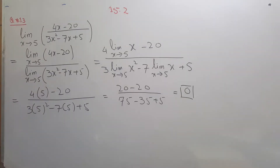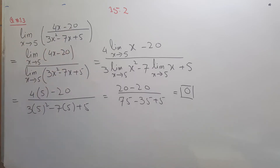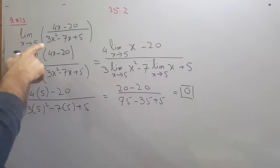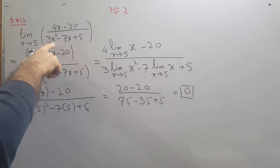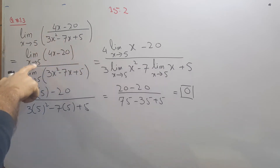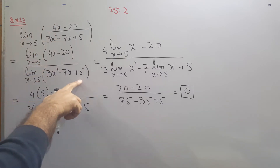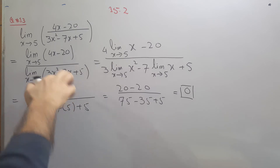Section 15.2 continues. Question number 13: find the limit as x approaches 5 of (4x minus 20) divided by (3x squared minus 7x plus 5). We can see that if you put 5 into the denominator it is not 0, so we can separately apply the limit on the numerator and on the denominator.